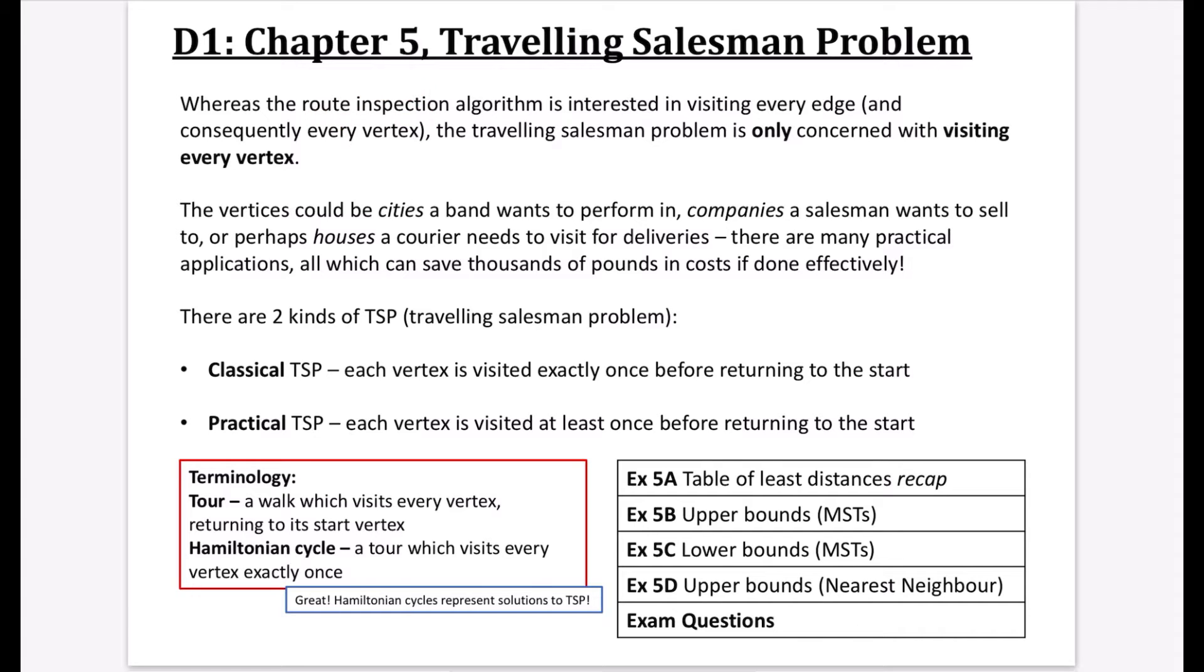So remember, route inspection was wanting to go along every street to deliver letters because it was sometimes called the postman algorithm. Whereas the traveling salesman problem is more interested in getting to what's at the end of each of those edges. In other words, it wants to get to the vertex. And you can pretty much see why it's called the traveling salesman problem.